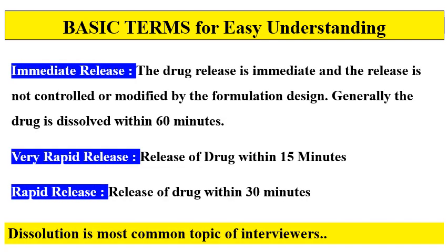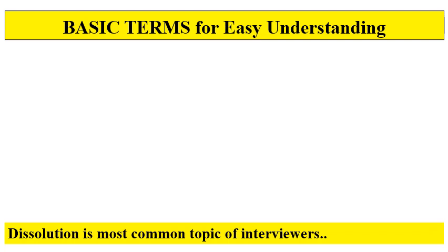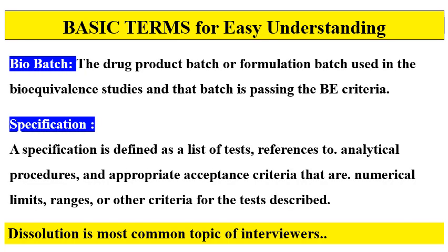Immediate release refers to formulations where there is no control on the release of the API — the drug release is not controlled or modified by the formulation design. Generally, the drug is dissolved within 60 minutes. Very rapid release means the drug is dissolved within 15 minutes, while rapid release means dissolution occurs within 30 minutes. Rapid release is generally for BCS Class 1 drugs, and very rapid release for BCS Class 3 drugs.